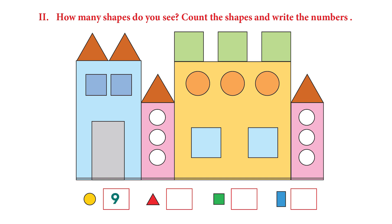Let's try triangles now. One, two, three, and four. We have four triangles. The third shape is a square. Let's look at it. One, two, three, four, five, six, seven, and the last one is a big orange square. So we have eight squares.